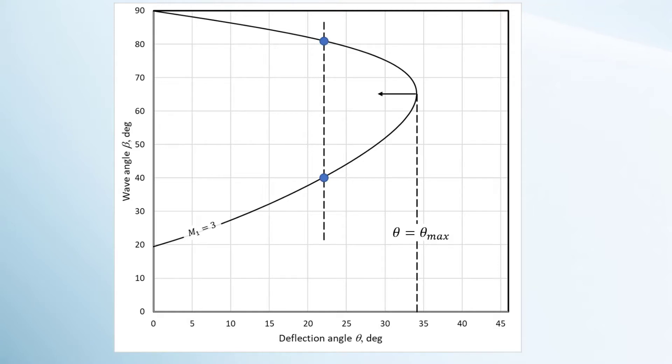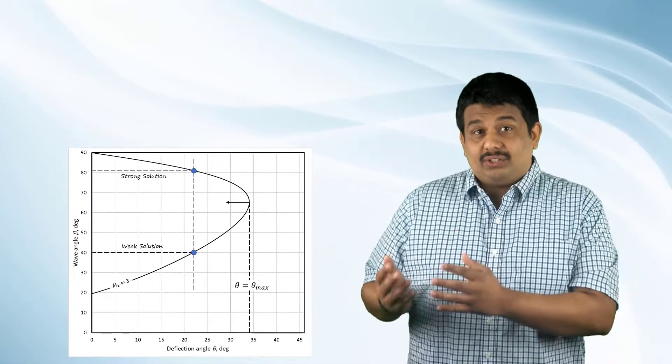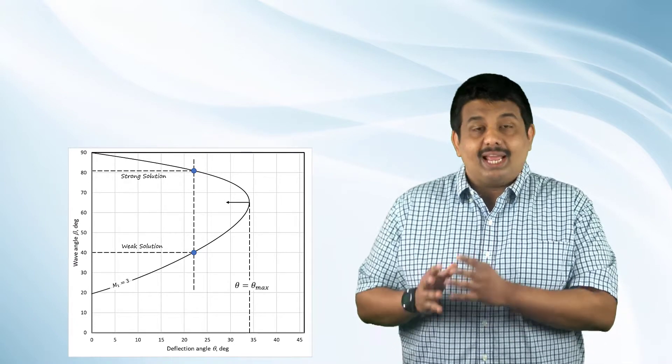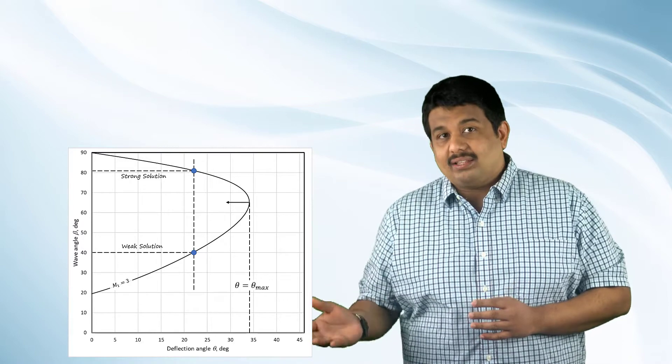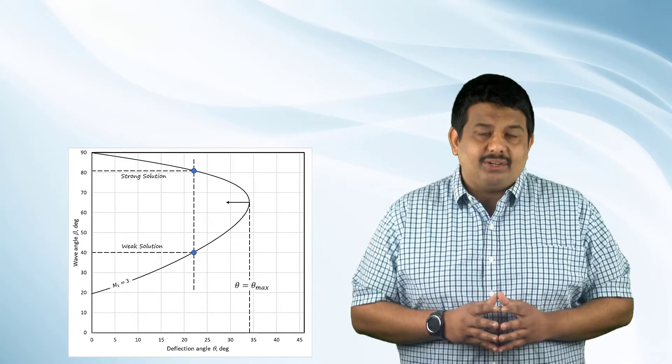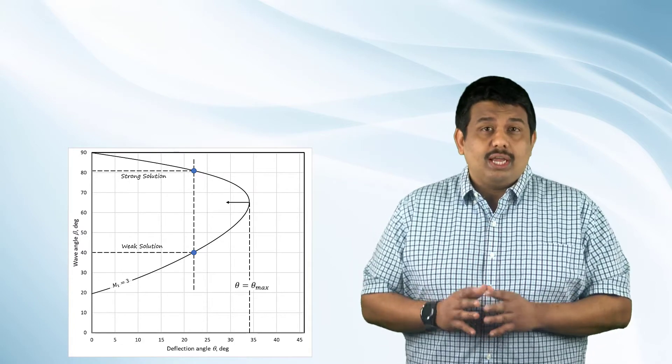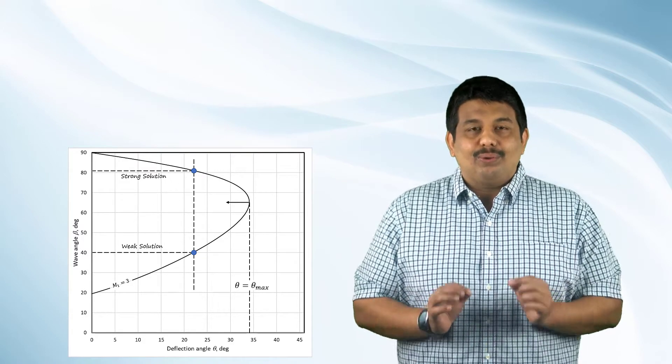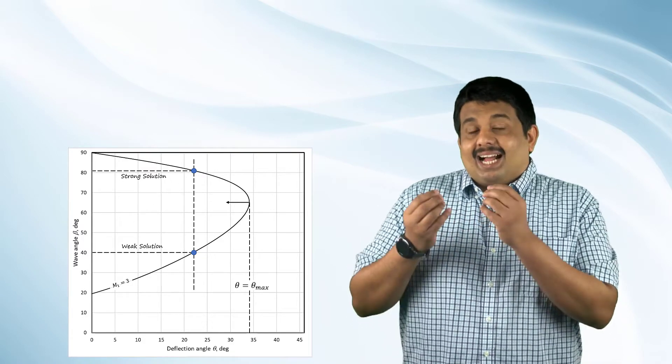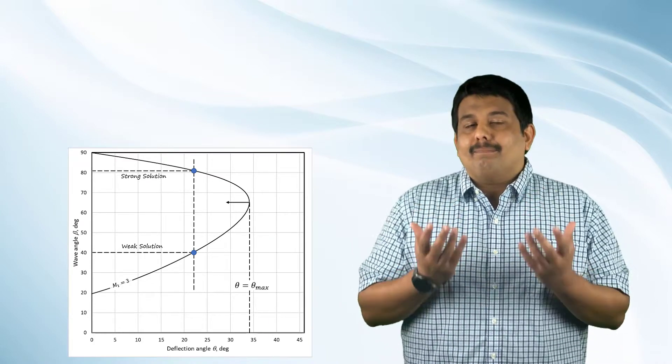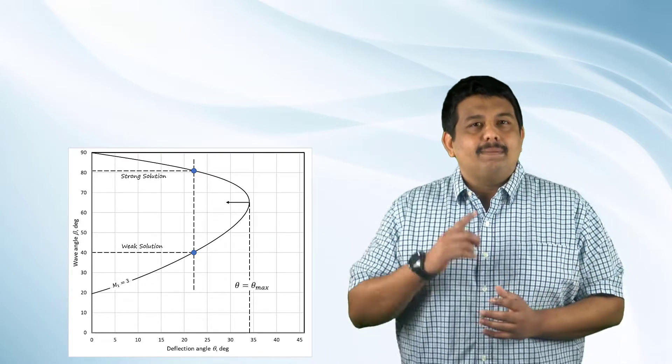For a given upstream Mach number and for all the deflection angles less than theta-max, there are always two solutions for the shock angle beta. The larger value of beta is called the strong shock solution and the smaller value is called the weak shock solution. For the strong solution, the Mach number behind the shock is always subsonic. On the other hand, for the weak solution, which is more common in nature, the Mach number behind the shock is supersonic except when theta is very close to theta-max.